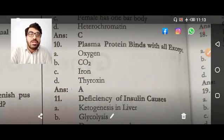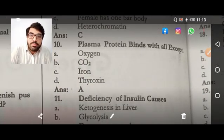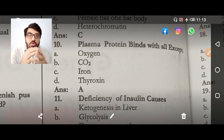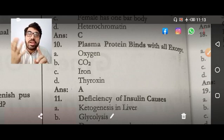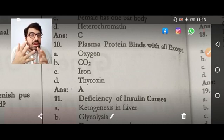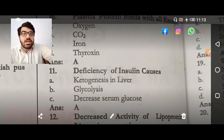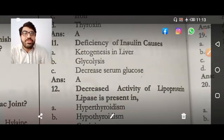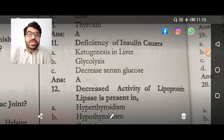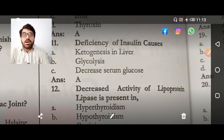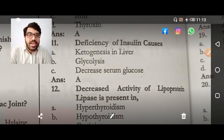Plasma protein binds with all except: plasma protein binds with CO2, iron, and thyroxine. It does not bind with oxygen — oxygen is carried by hemoglobin and also in dissolved form directly.